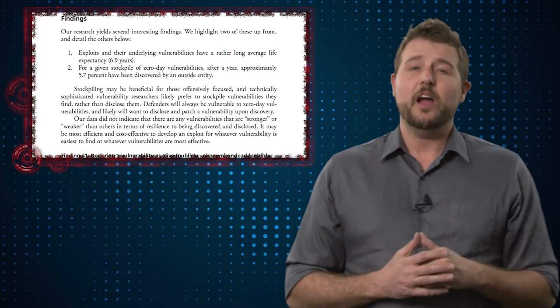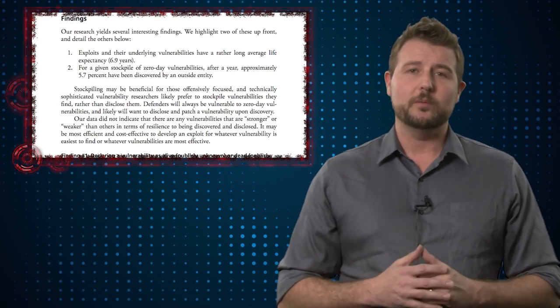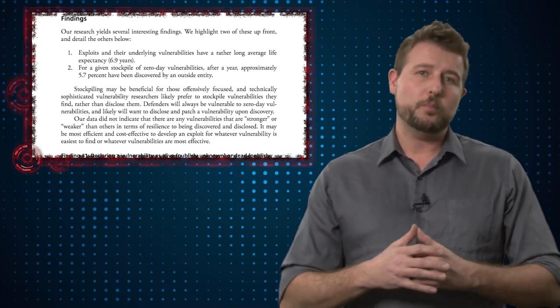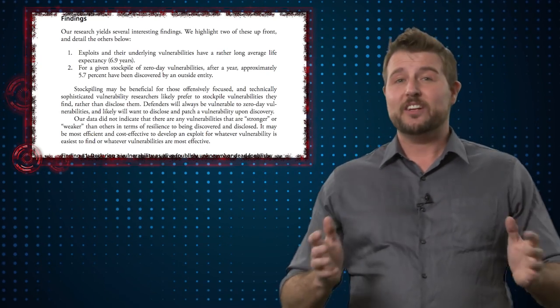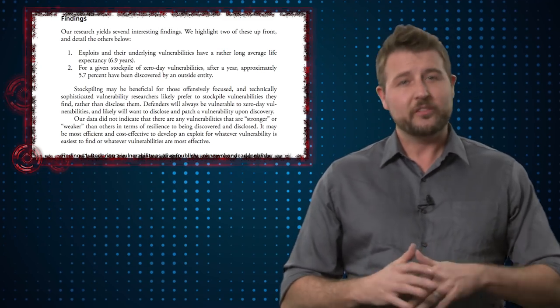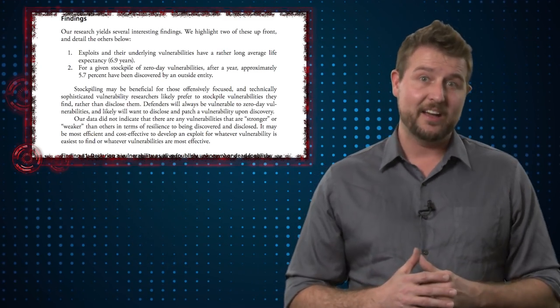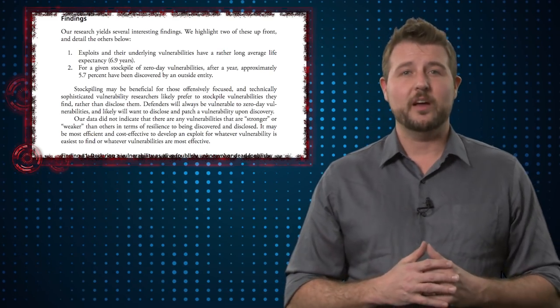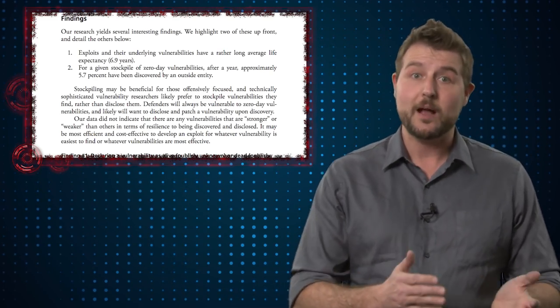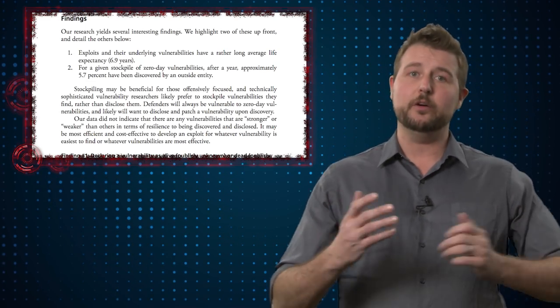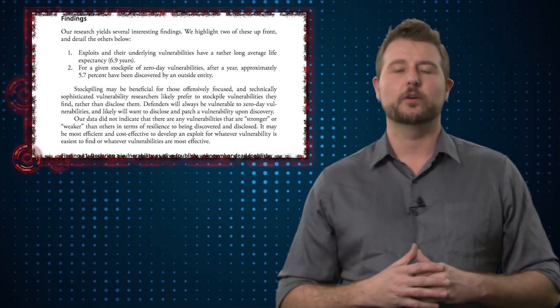For instance, they say on average, a zero-day vulnerability is effective for around 6.9, almost seven years. Of course, that's just the average. The report also mentions around 25 percent of those vulnerabilities become public within a year and a half, whereas another 25 percent may not become public for up to nine years. So there's a big range for how long these zero-day issues really remain zero-day.